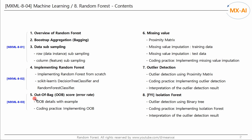This is part 4 of a series on random forest. In the previous video, we looked at the out-of-bag score. In this video, we will look at how to handle missing values in a dataset. Let's take a look at the proximity matrix and how to use it to handle missing values in the training and test data.